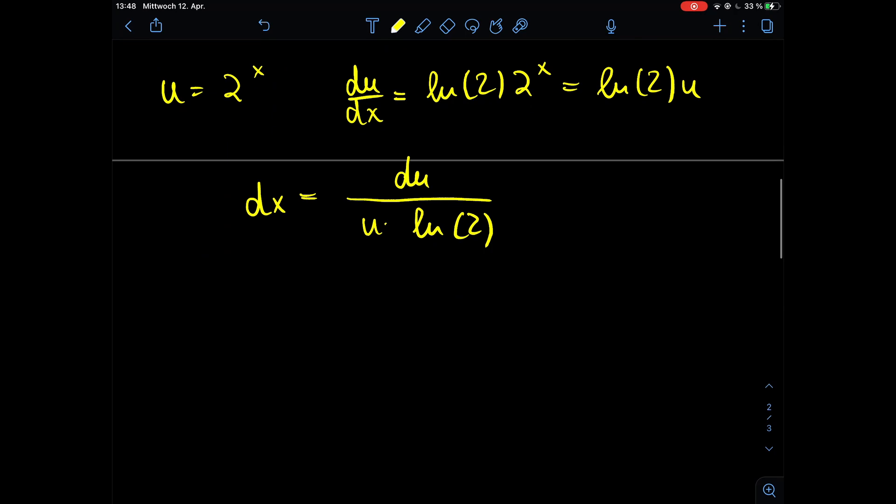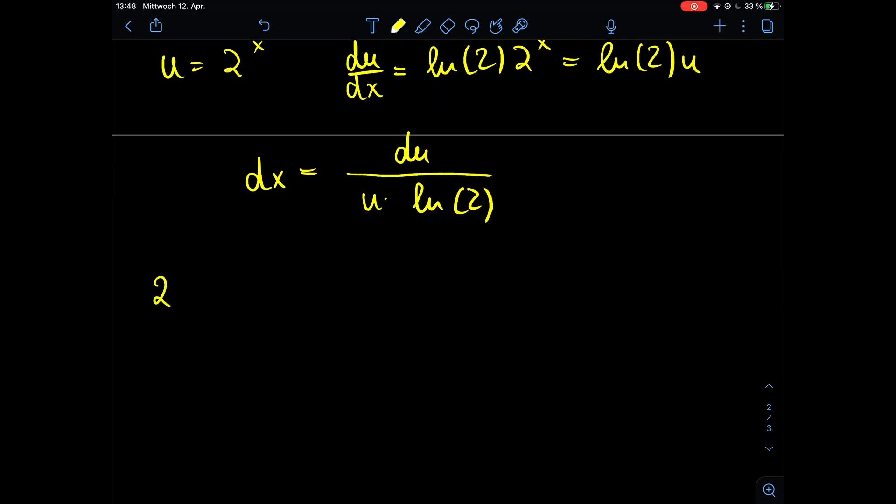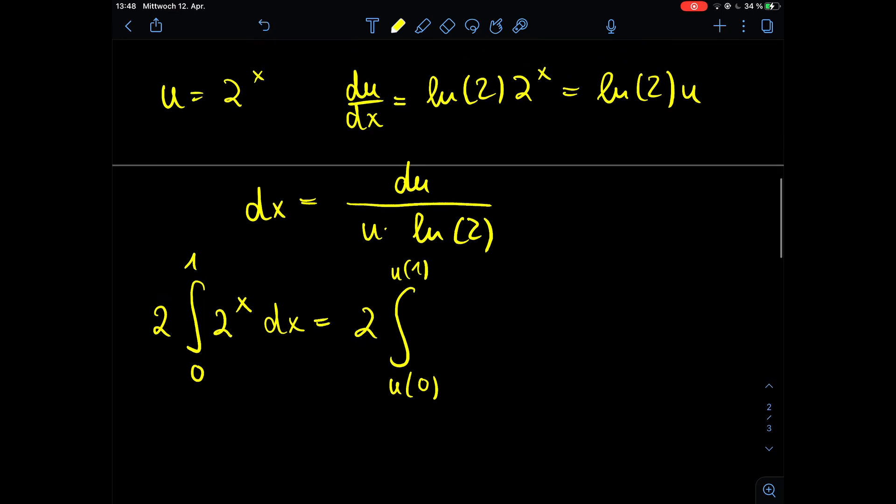So this we can now plug in into our integral. Our integral so far looked like 2 times the integral from 0 to 1 of 2 to the power of x dx. The 2 stays. Now we have to substitute the limits of the integral so we have u of 0 and u of 1, and then we plug in the u itself and the du which is u times ln of 2.